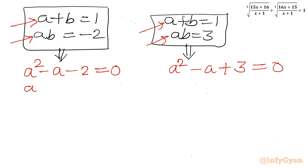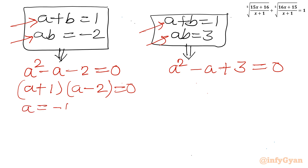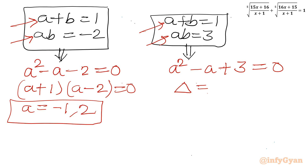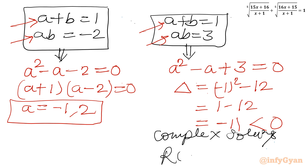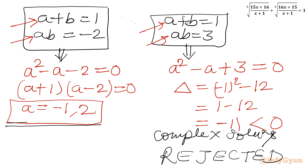Since the discriminant of System 2 is negative, it yields only complex solutions and is rejected. We accept only a = −1 and a = 2 from System 1.